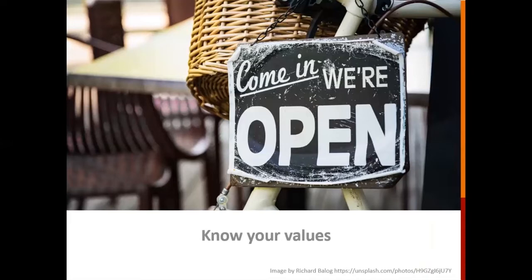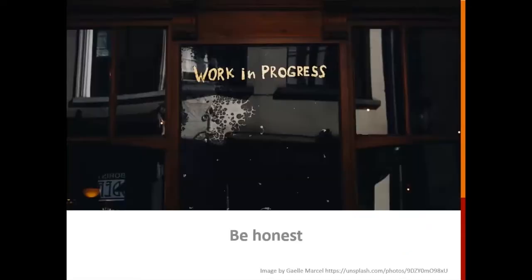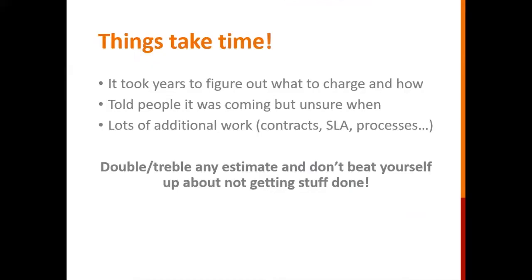We knew that people were used to getting it for free, and to be quite honest it was hard to calculate what this even costs to run. But the primary thing you need to know is what your values are. When I first approached Glasgow University they wanted us to protect the IP and set up a company spin-out — and that was absolutely not what I wanted, nor was it the DCC's values. We really wanted to keep free access to the tool wherever possible, not charging researchers. This led to the freemium model: an open source code base that anyone can run themselves, with charges on added-value services for institutions that want all the admin data.